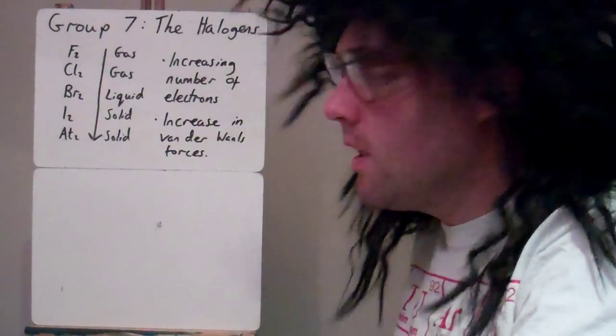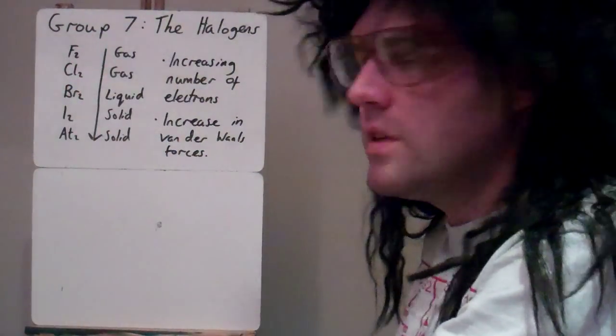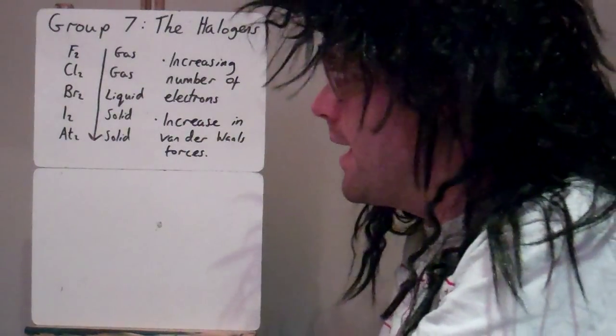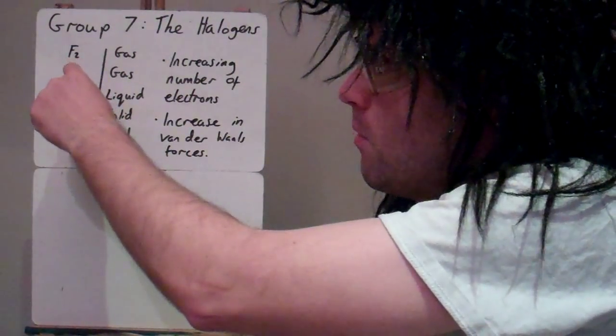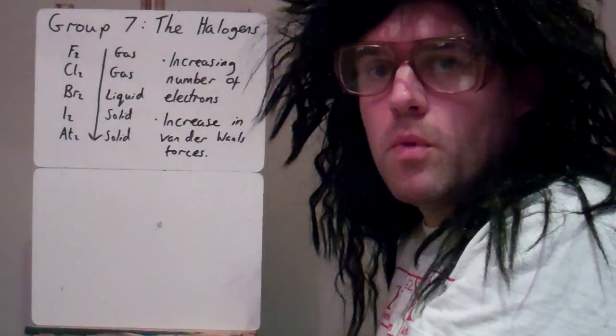So here we're looking at group 7, the halogens. Here they are. First thing to notice they're all diatomic, as in they go around in pairs. So each one is a molecule with two atoms bonded together.